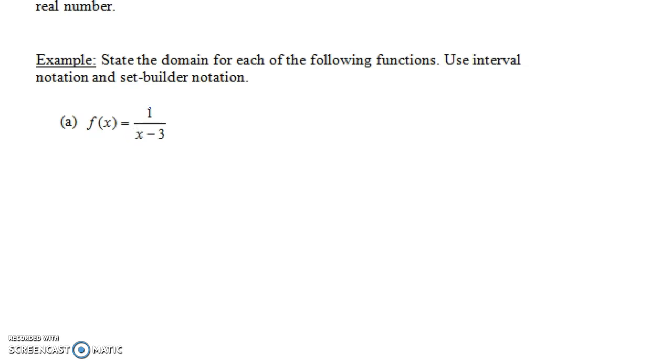We can't put in 3 for x because if we put in 3 we'd have 1 over 0 and we can't divide by 0. You can't have 0 in the denominator of a function. So this domain would be the set of all real numbers except x equals 3. The way that you'd write this in what's called set builder notation is you draw these squiggly brackets and you write x such that x is not equal to 3. The colon, these two dots, means such that. So the set of all x such that x is not equal to 3. That's called set builder notation.